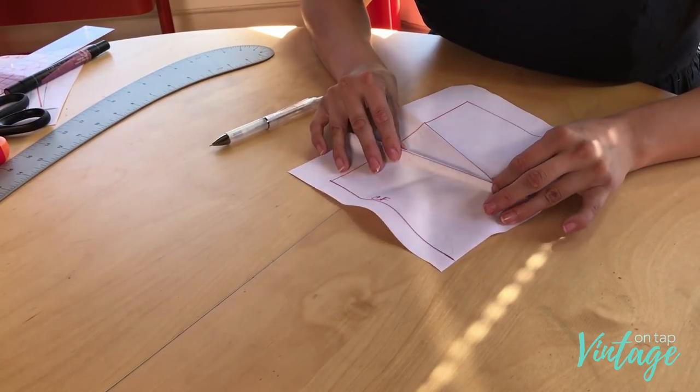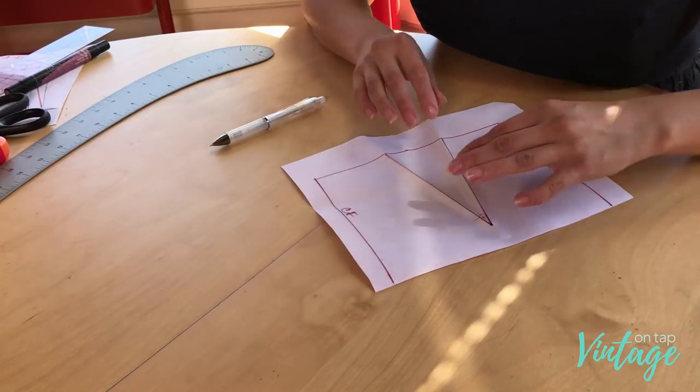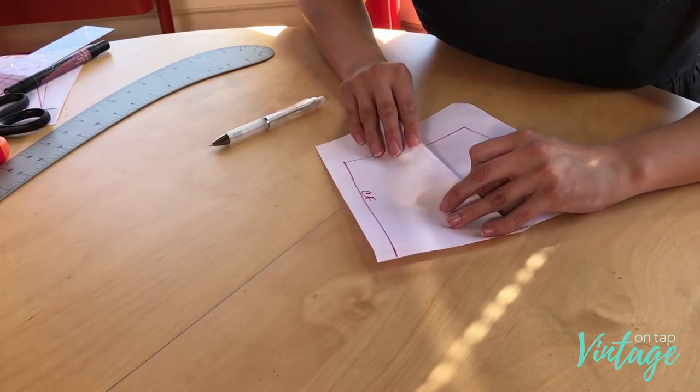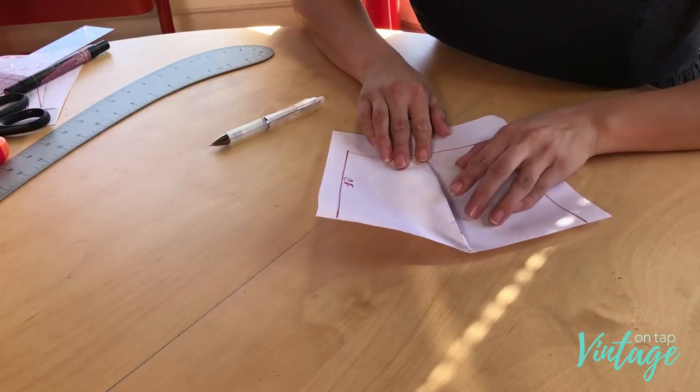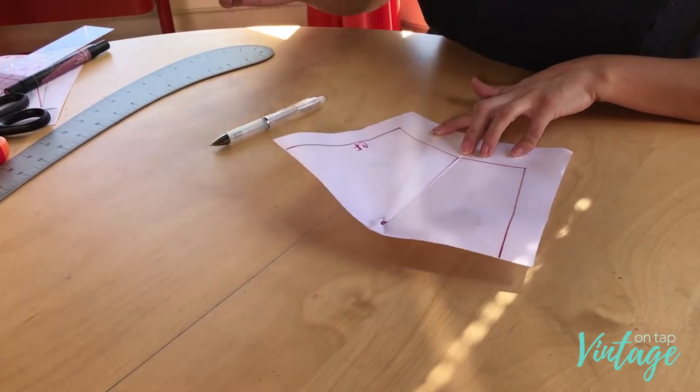So I'm going to fold my dart. I'm just doing this so you can see where that dart is. If this is my center front and I'm dealing with a piece of fabric, you have to think about how you would normally fold the dart. You would normally fold the dart towards the center front when you're finishing your piece.